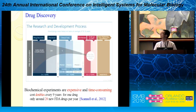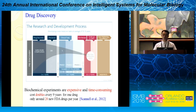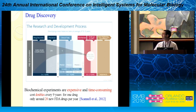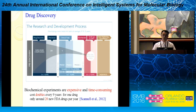Drug discovery is a very classic problem. I think maybe most of you are more familiar with this topic than me because I'm from a computer science background. Anyway, drug discovery is a very time-consuming process and it usually takes more than 10 years to get a new drug. Chemical experiments are very expensive and time-consuming. In recent studies they found that the cost doubles every nine years for one drug. Each year around 20 drugs are approved by the FDA. So we think to use computational methods to help us find new drugs and reduce the cost.